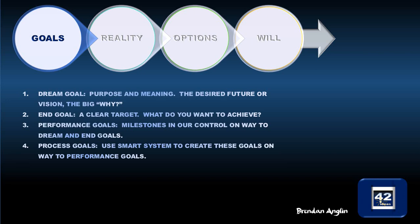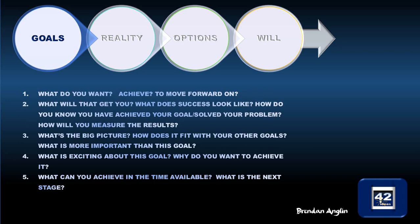Process Goals are completely — 100% — in our control, and we use a SMART model to get specific goals along the way to achieving our performance goals. The kind of questions you would ask in the Goal section are: What do you want to achieve? What do you want to move forward on? How does success actually look like, so that when you achieve it you know what it looks like — a clear image of success, not just a vague idea. Also, why do you want to achieve it? What is so motivating about this goal?